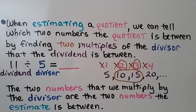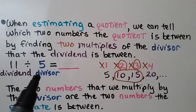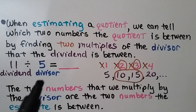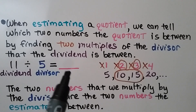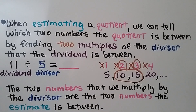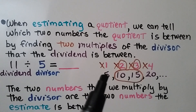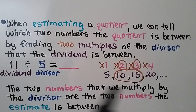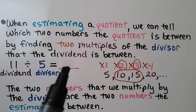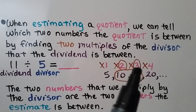When estimating a quotient, we can tell which two numbers the quotient is between by finding two multiples of the divisor that the dividend is between. Using easy numbers: 11 divided by 5. The 11 is the dividend, the 5 is the divisor. The multiples of 5 are 5, 10, 15, 20, and 11 is in between 10 and 15, so our quotient is in between 2 and 3.